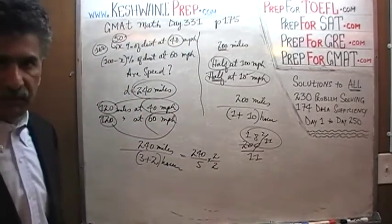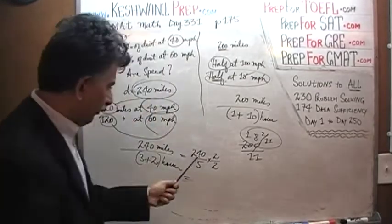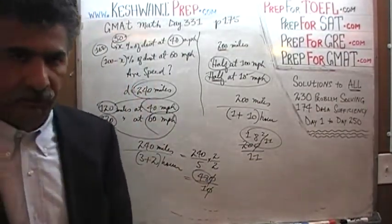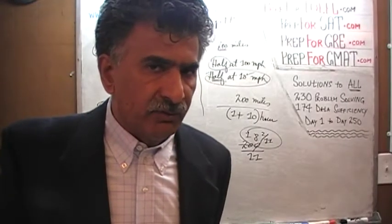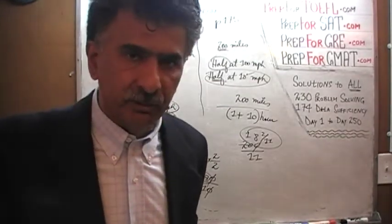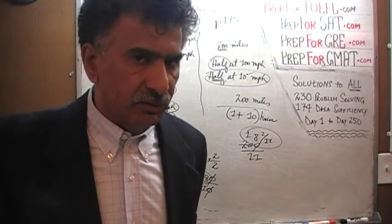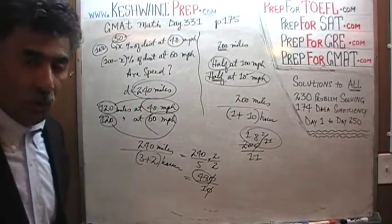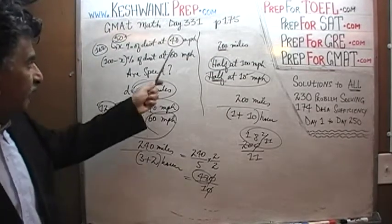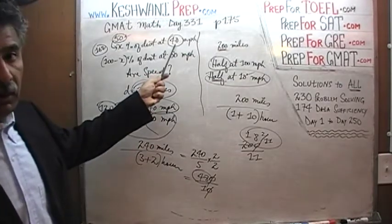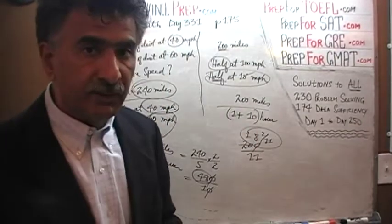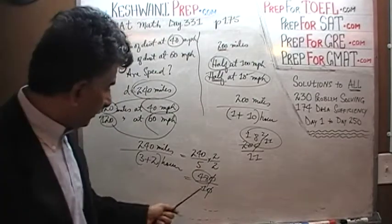So assuming we travel half of our journey at 40 mph and the other half at 60 mph, regardless of the actual distance — whether 10 miles or 17,000 miles — the average speed will always come out to exactly 48 miles per hour. It's 48 and not 50 because we spend the majority of our time at the lower speed, which pulls the average down. Now we go through the answer choices and replace X with 50 until we find 48.